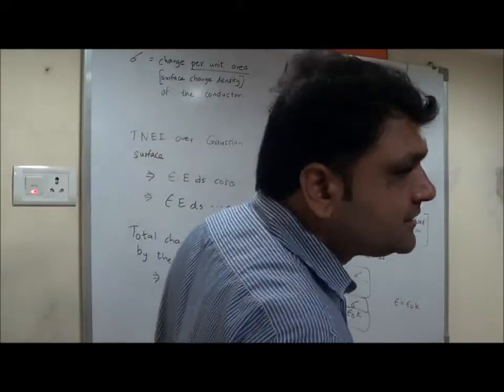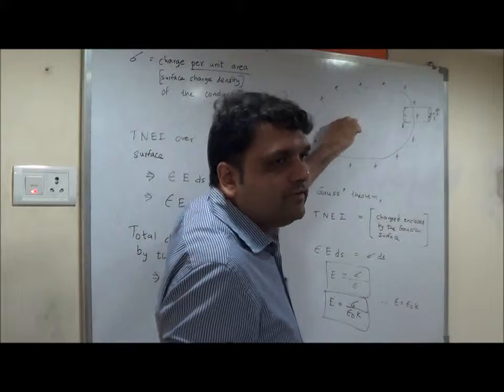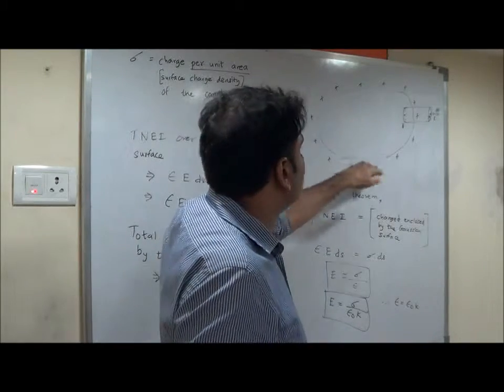The situation is something like this: we have a charged conductor of any shape. Whatever charge we give it, because it is a conductor, charge will spread on the surface. We are giving it positive charge.